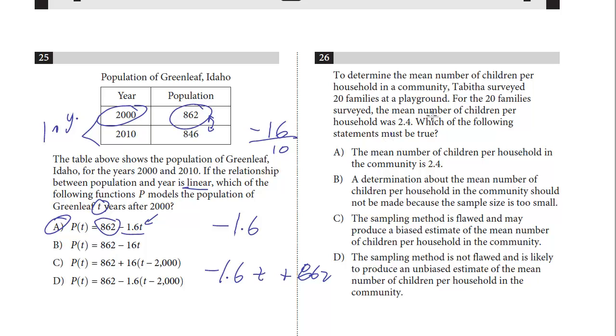You want to be careful, just by reading it you can almost predict where this is going. To determine the mean number of children in a community... Now, if we're making a determination about the population, which is all the people in the community, you always have to have a fair random sample. And you can just tell right away if they're only asking people at a playground, is that fair? Is that a fair cross-section of the community? No. And also, people at playgrounds probably have kids, don't they? So that's going to skew, I think, the results.